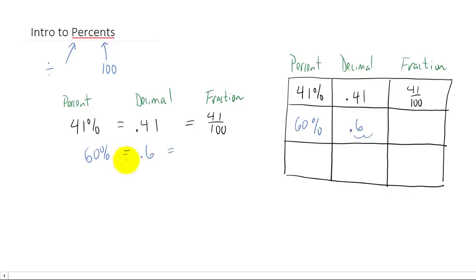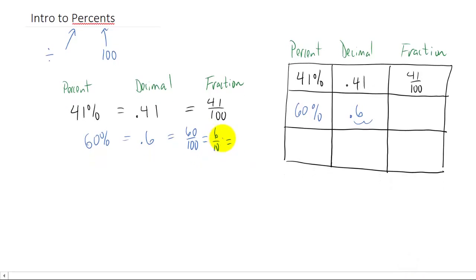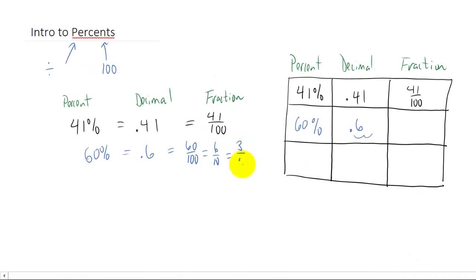Now if we want to write this sixty percent as a fraction, that's sixty over one hundred, which can actually be reduced. We can divide numerator and denominator by a factor of ten to get six tenths. And then we can divide numerator and denominator by two to get three fifths. So we write the percent as a fraction over a hundred, and then we reduce to get three fifths.